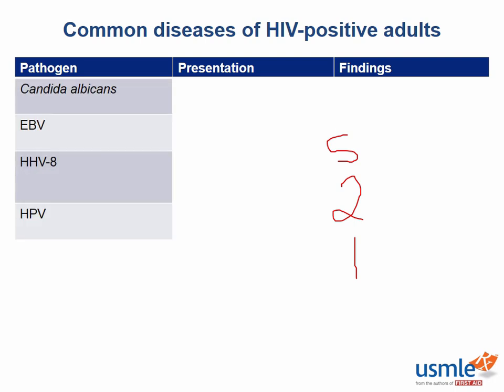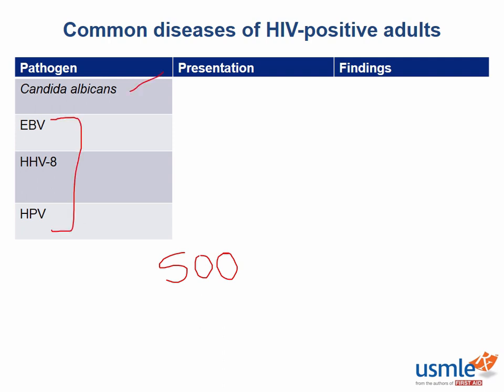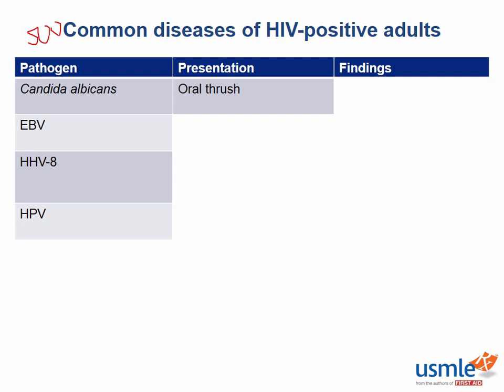At 500 CD4 cells per millimeters cubed, the four important pathogens are Candida albicans, Epstein-Barr virus, Human herpes virus 8, and Human papillomavirus — three viruses and one fungus. Candida is a fungus and it typically presents as oral thrush, a fungal infection of the oral cavity. The key clinical exam finding is a scrapable white plaque on the tongue. Under the microscope, we will see characteristic pseudohyphae significant for Candida.